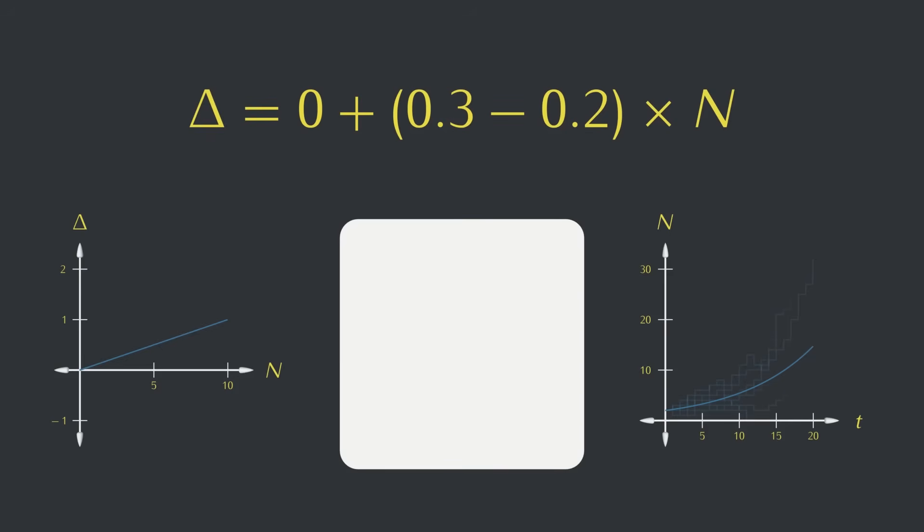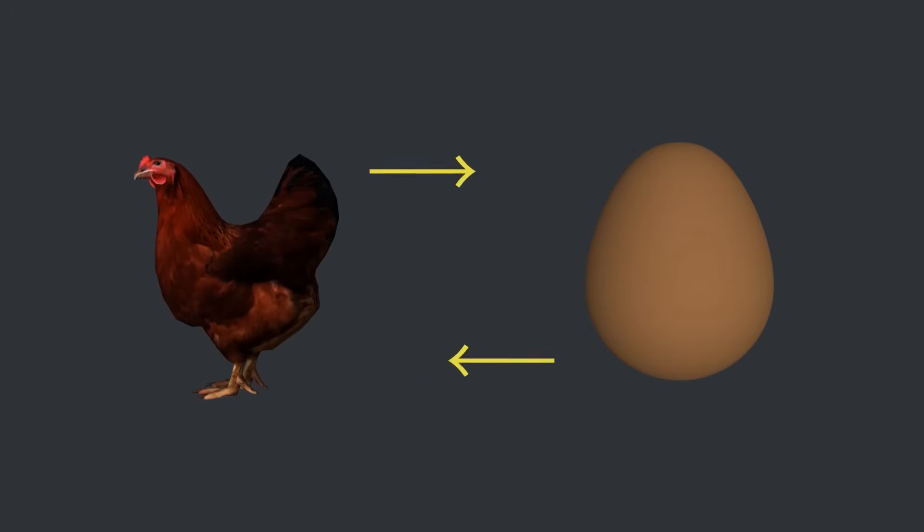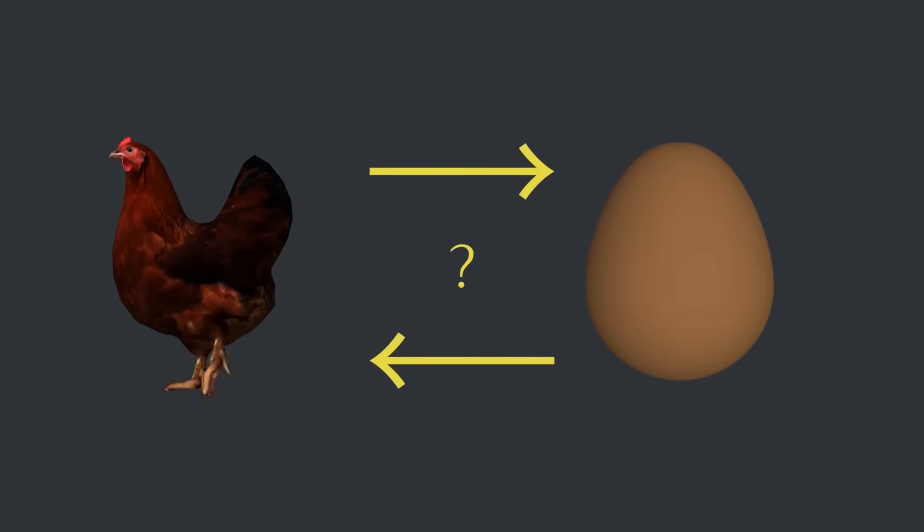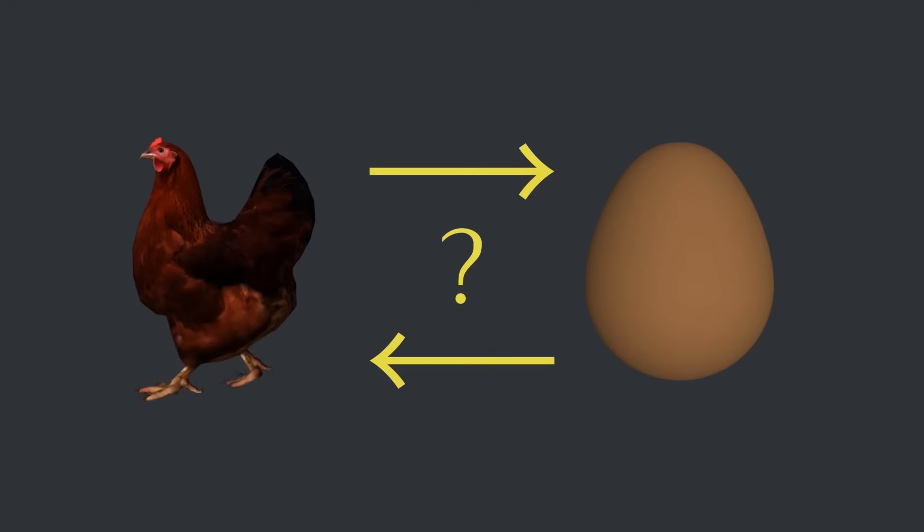Creatures that depend only on replication are on a knife's edge, especially when their numbers are small. So, if complex organisms can't appear spontaneously, and they can't replicate unless they already exist, how do they get their start? We'll find out as we keep building our model in the next video. See you then.